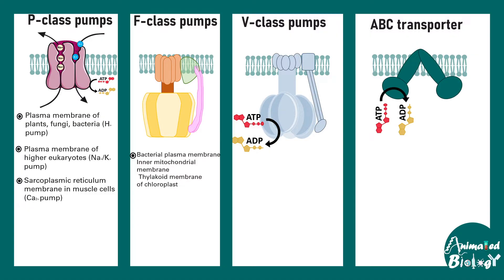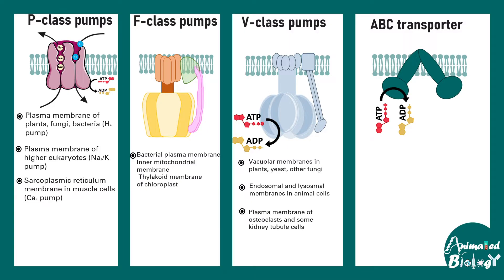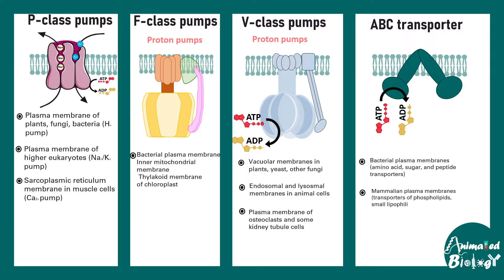V-class pumps are present in vacuoles, lysosomes, and other membrane-bound compartments such as endosomes. They help transport protons and aid in acidification. ABC transporters are important in bacterial plasma membranes for taking up nutrients such as amino acids, sugars, and peptides. In mammalian plasma membranes they transport phospholipids, small lipophilic drugs, and cholesterol. ABC transporters are highly studied in the context of multi-drug resistance because many encode efflux pumps that expel antibiotics and other drugs from the cell.